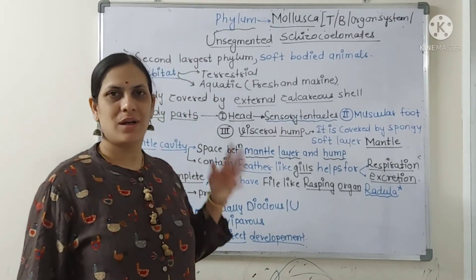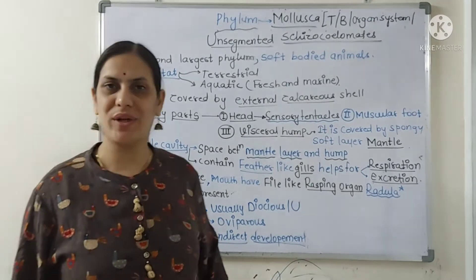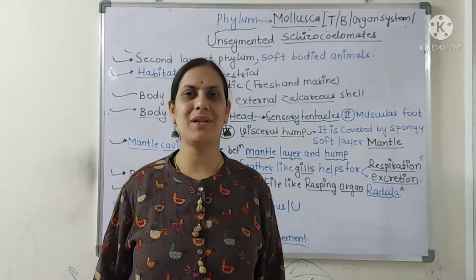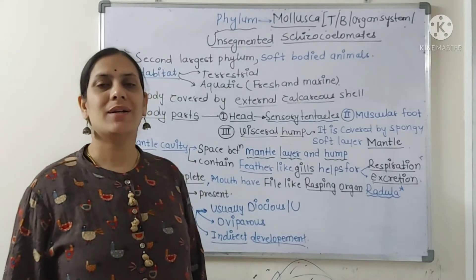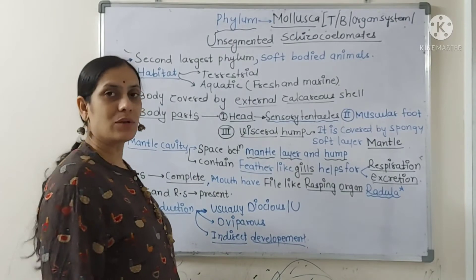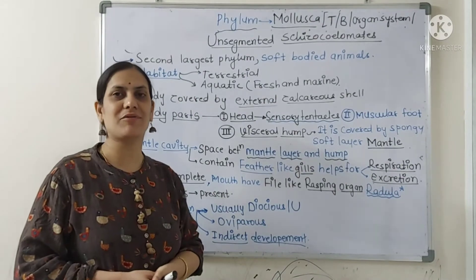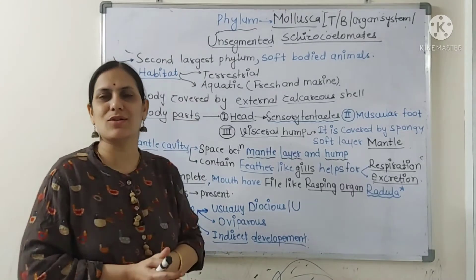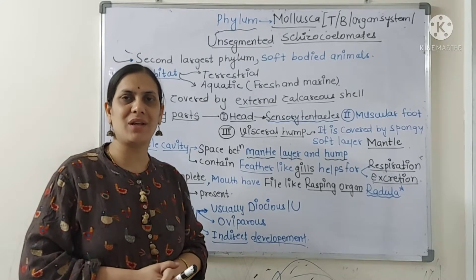Let's start with new phylum recall zoology. In the previous video we covered the first or largest phylum in kingdom Animalia, that is Arthropoda — the animals with jointed legs. Now we are going to check the main features of the second largest phylum, that is Phylum Mollusca. It is the second largest phylum after Arthropoda. Major examples include octopus, snail, and squid.